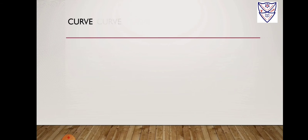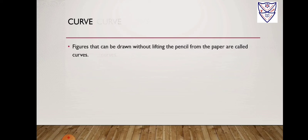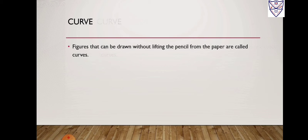What is a curve? Curve means the figures that can be drawn without lifting the pencil from the paper are called curves. So in mathematics, a curve can be straight, though in common language it is not so. When we draw a curve, we cannot see that the curve is straight, but in mathematical language we can say that a curve can be straight.